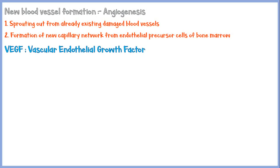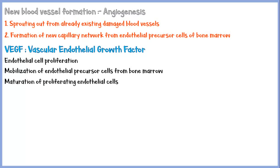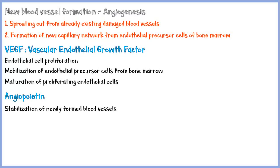VEGF enhances the proliferation of endothelial cells, induces mobilization of endothelial precursor cells from bone marrow, and induces maturation of proliferating endothelial cells. In addition to VEGF, there is another mediator called angiopoietin, whose main function is stabilization of the newly formed vessels.